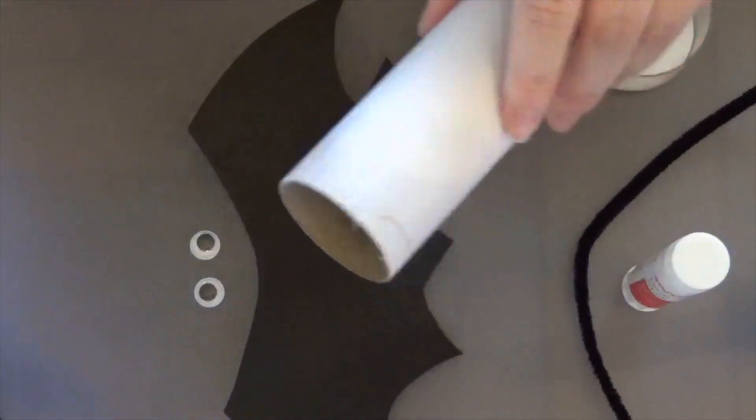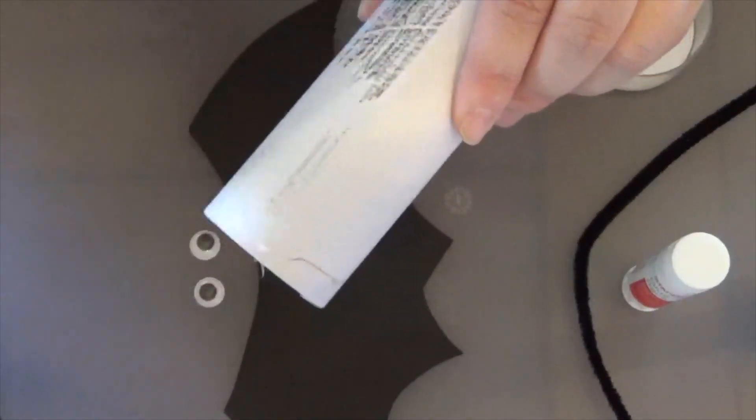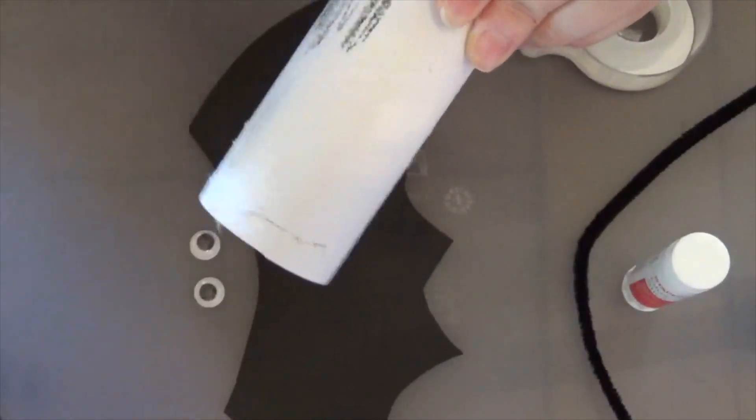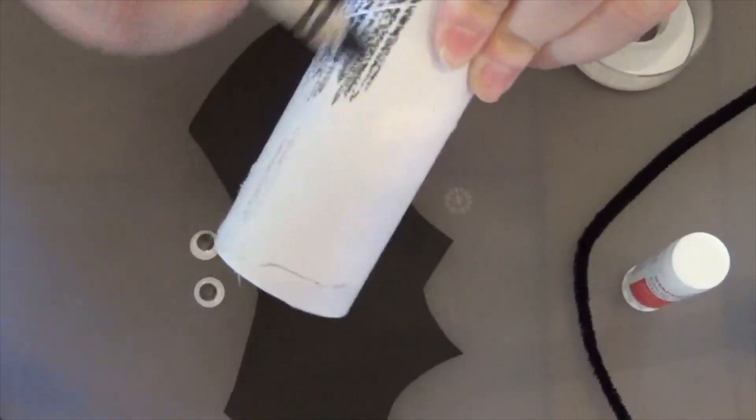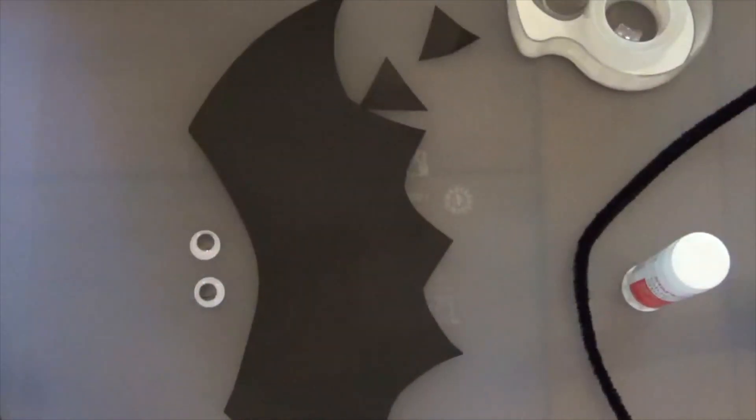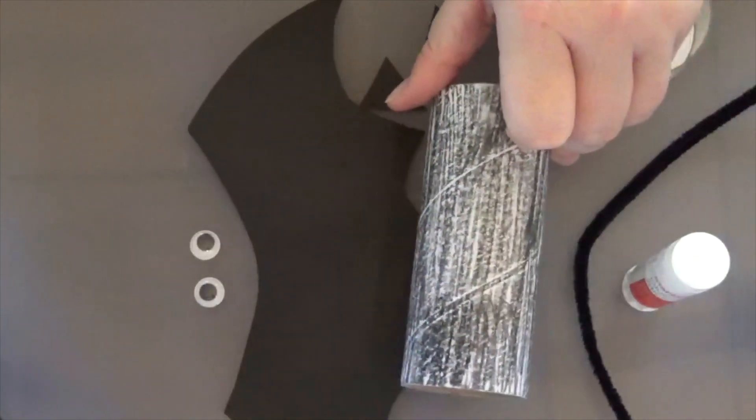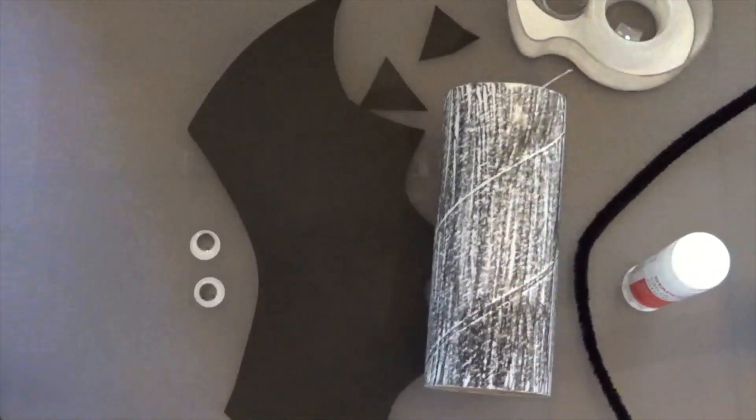The very first thing you're going to do is you need to color your whole toilet paper tube, whatever color you have decided on. I decided black. So I'm going to color the whole entire thing until it's all nice and colored like that.